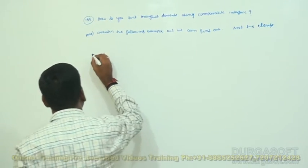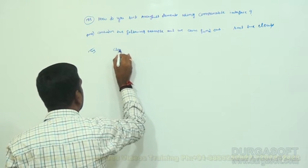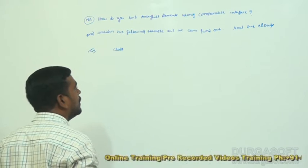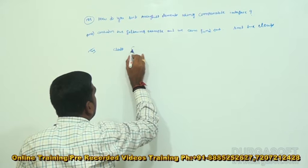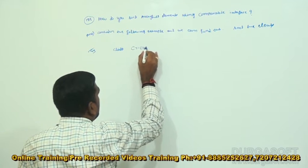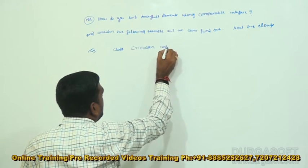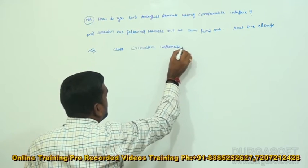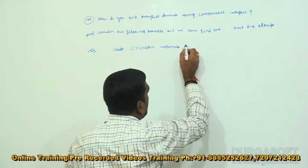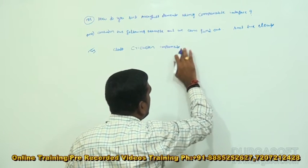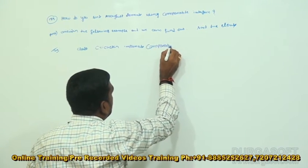See, now here I am going to take a class. So the class name is Cricketer. It implements the Comparable interface. Comparable interface is available in the util package.